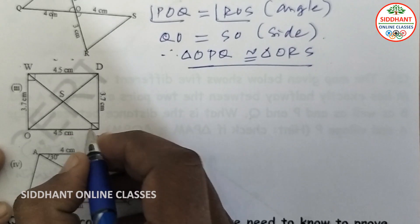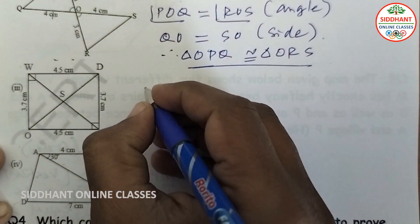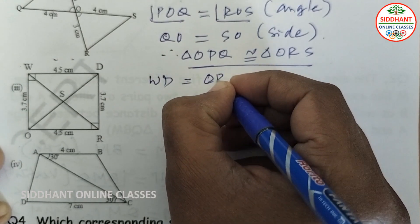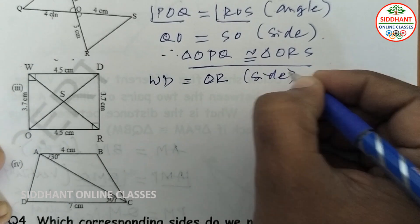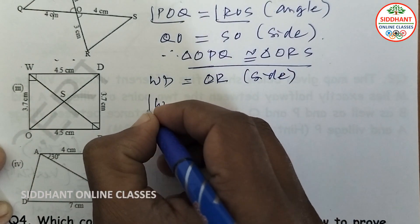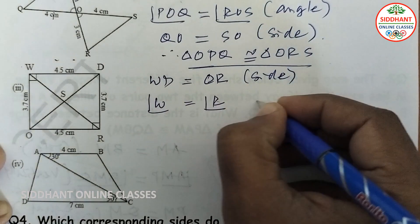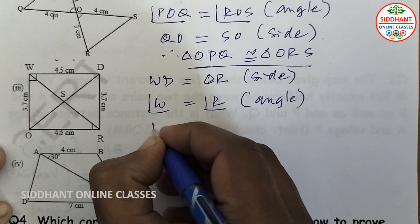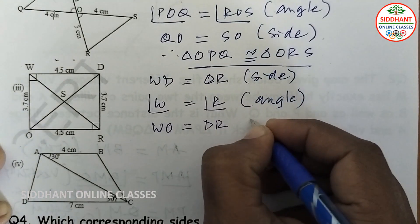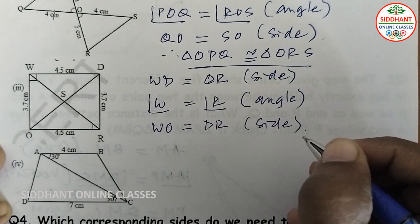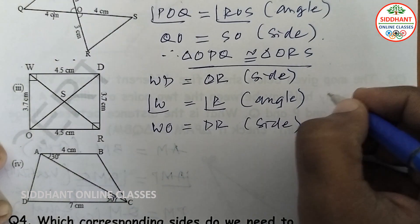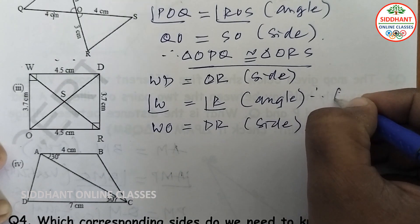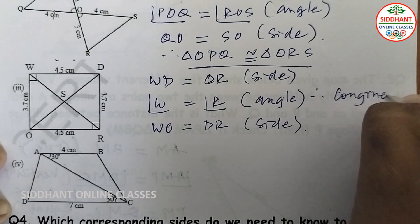For the third pair, a rectangle is given where sides are marked. WD is equal to the corresponding side, and the SAS conditions are satisfied. According to the SAS rule, the two triangles are congruent.